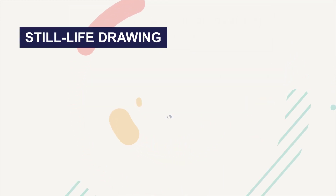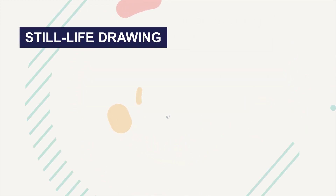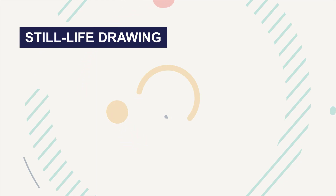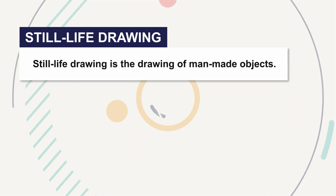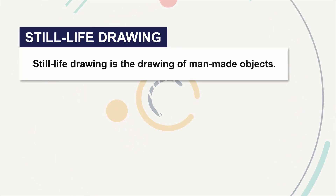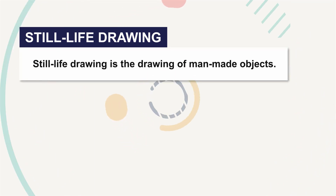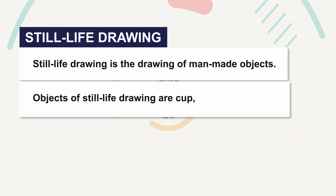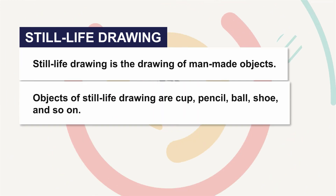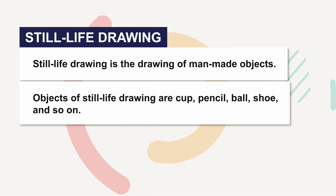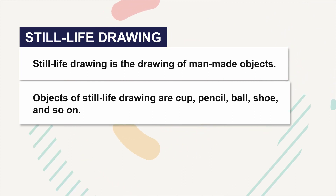Meaning of still life drawing: Still life drawing is a drawing of man-made objects. Objects of still life drawing include a crop, pencil, ball, shoes, and so on.